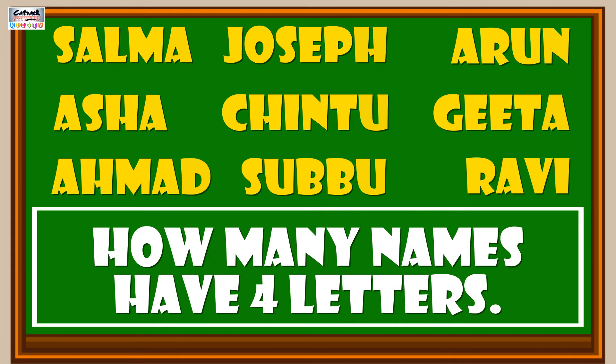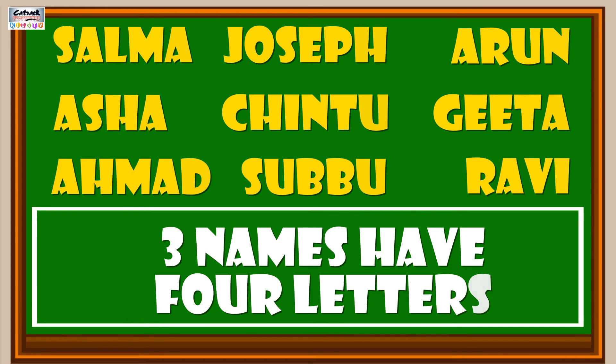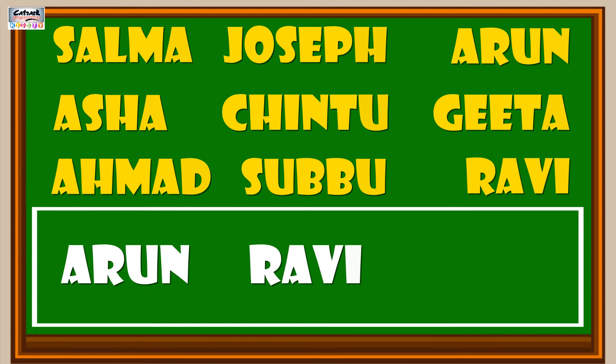3 names have 4 letters: Arun, Ravie, and Asha.